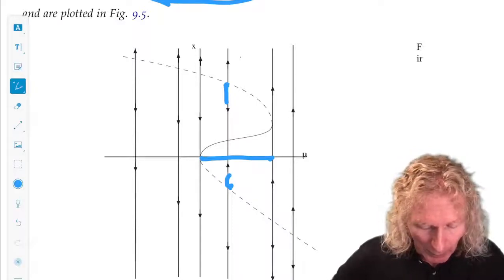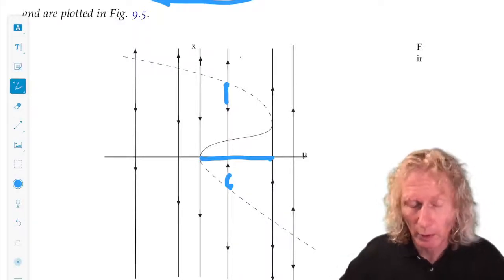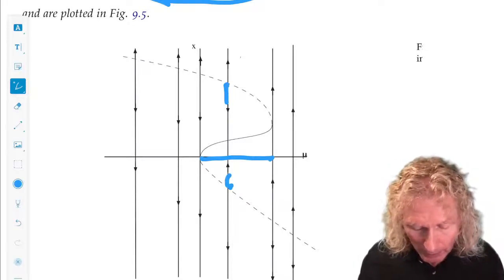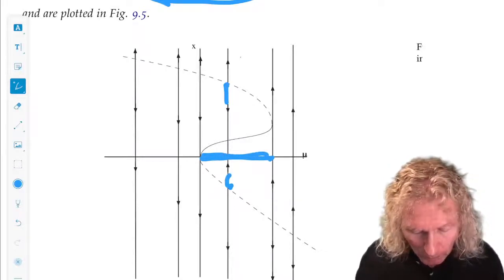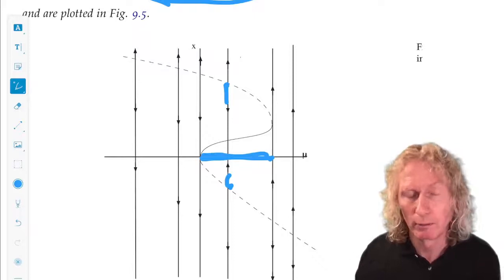If you're outside those branches, you just go off to infinity. And if you're outside this interval, you also just evolve to infinity.